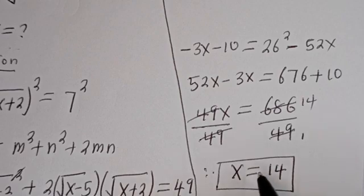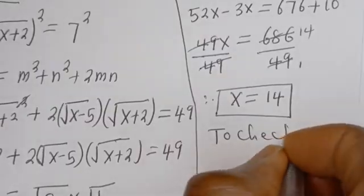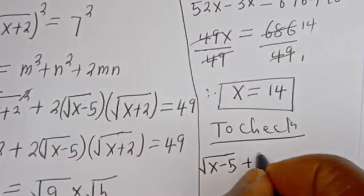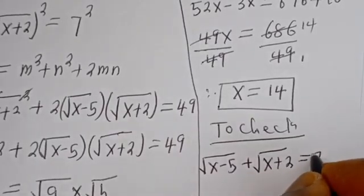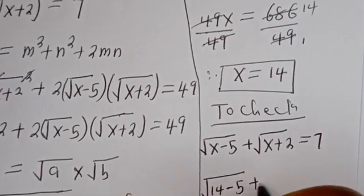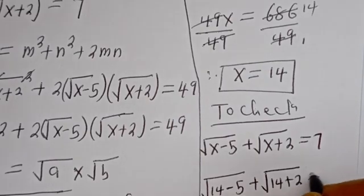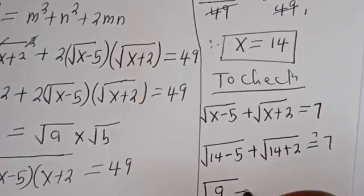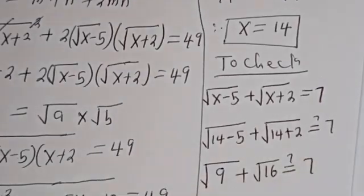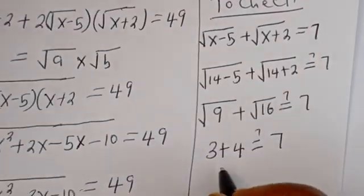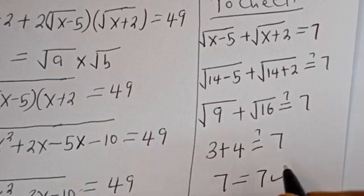We can check to confirm if this answer is right. To check, we use the given equation: square root of s minus 5 plus square root of s plus 2, is equal to 7. When s is 14, we have square root of 14 minus 5 plus square root of 14 plus 2, which must equal 7. That gives square root of 9 plus square root of 16, which is 3 plus 4, that is 7, equal to 7 — which is true. So s equals 14 is verified.